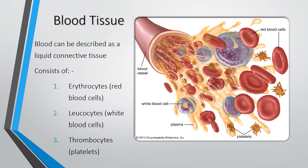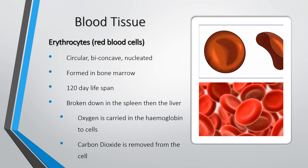Blood is also described as a liquid connective tissue. It consists of erythrocytes, which are the red blood cells; leukocytes, which are the white blood cells; and thrombocytes, which are the platelets — responsible for helping blood to clot. We'll cover more about blood when we get to the circulatory system.